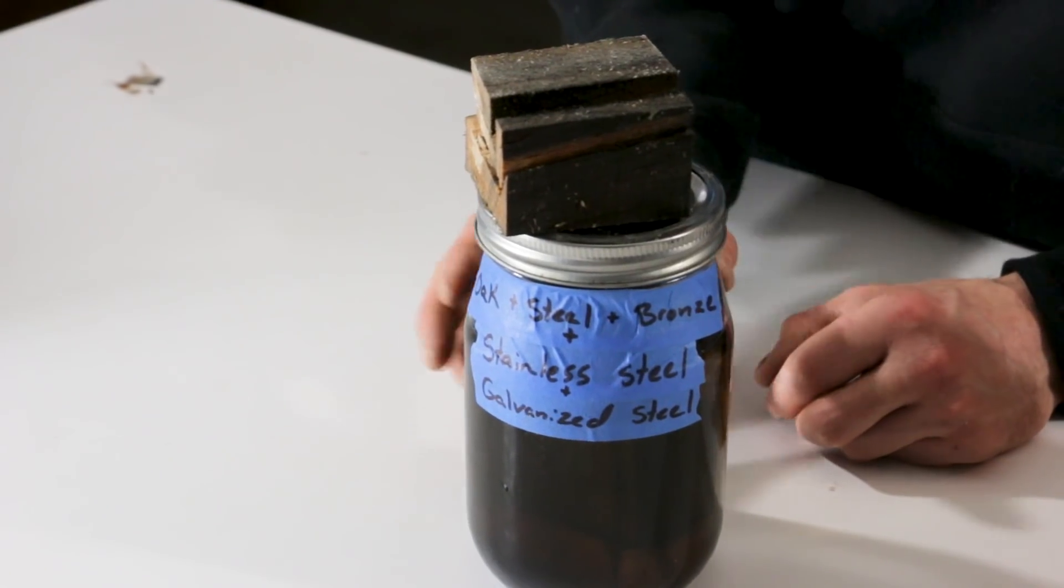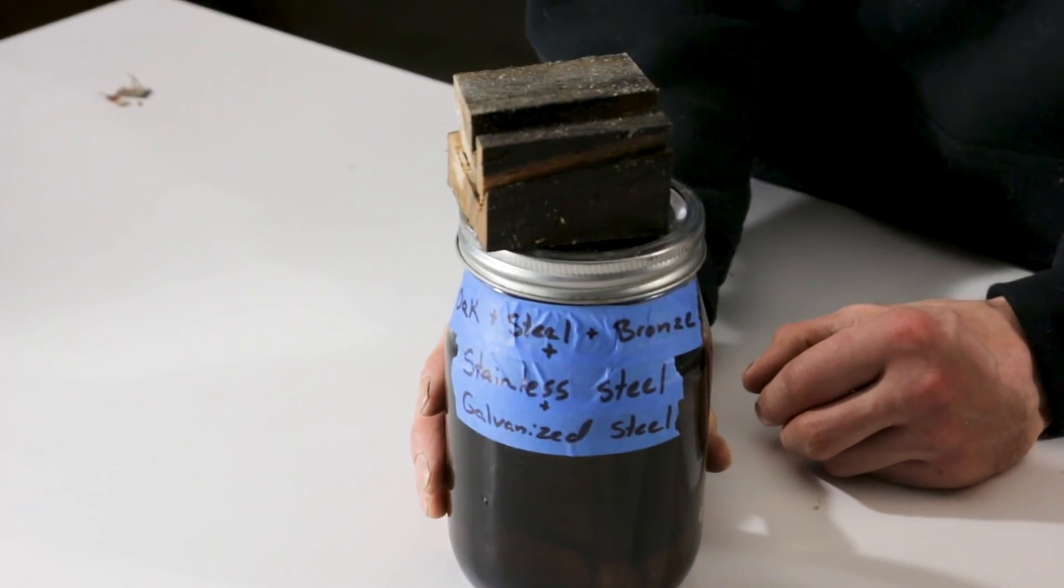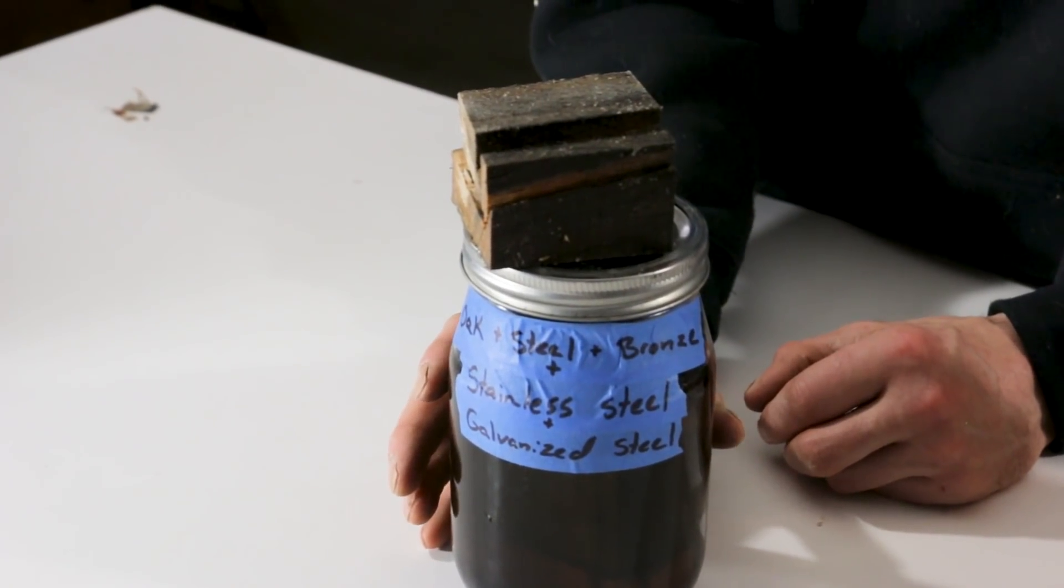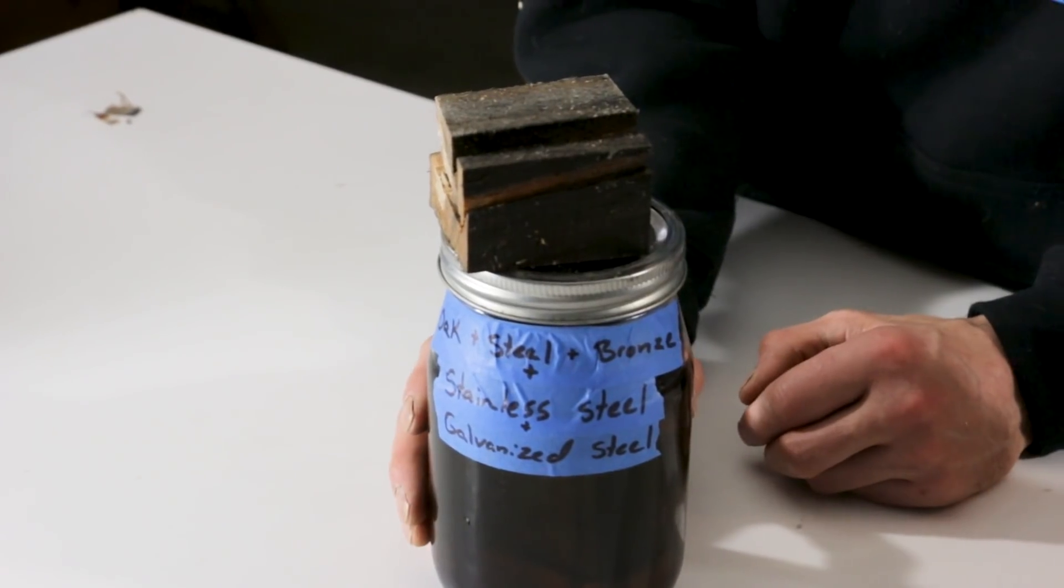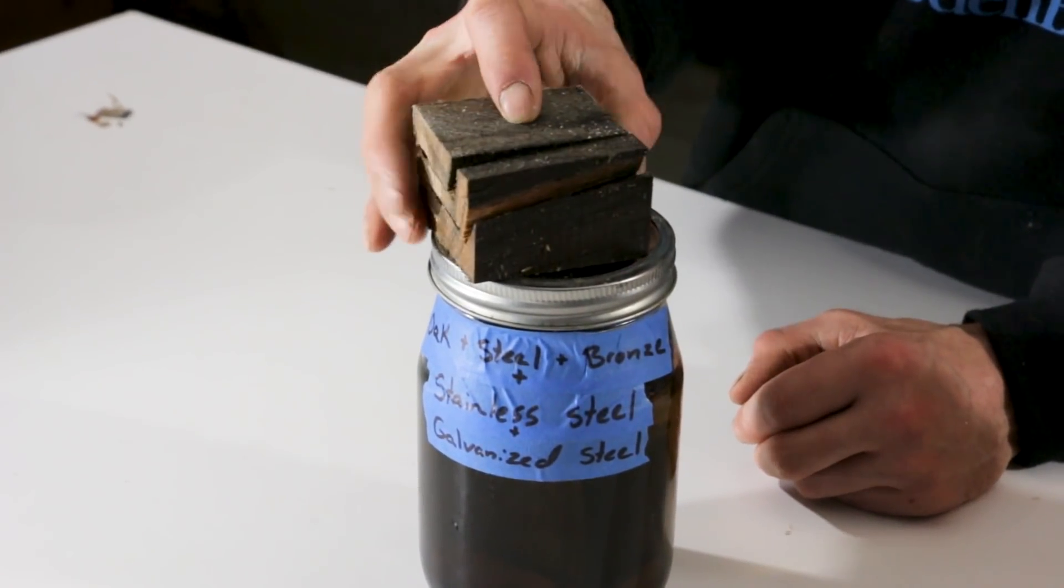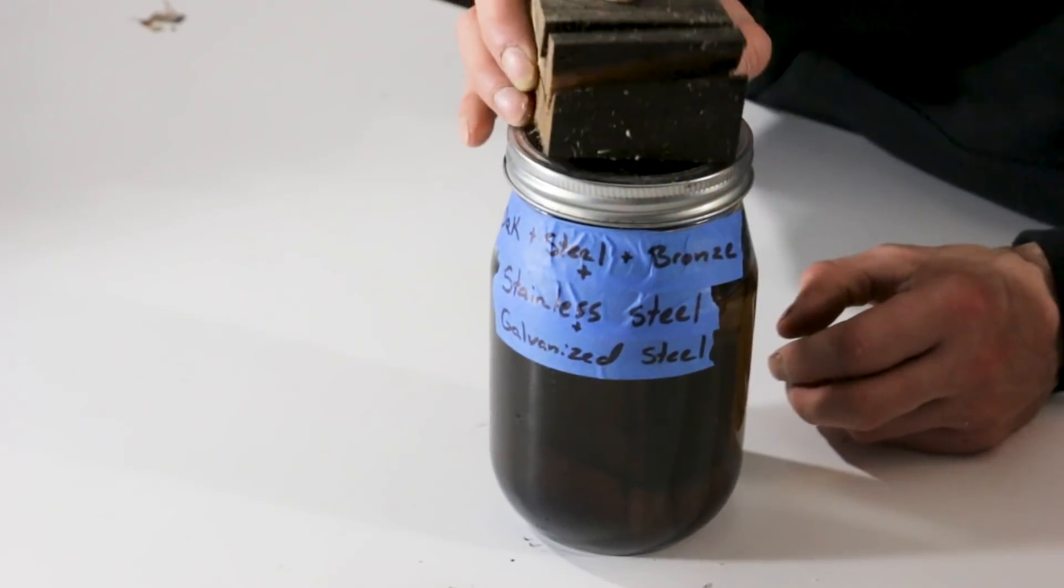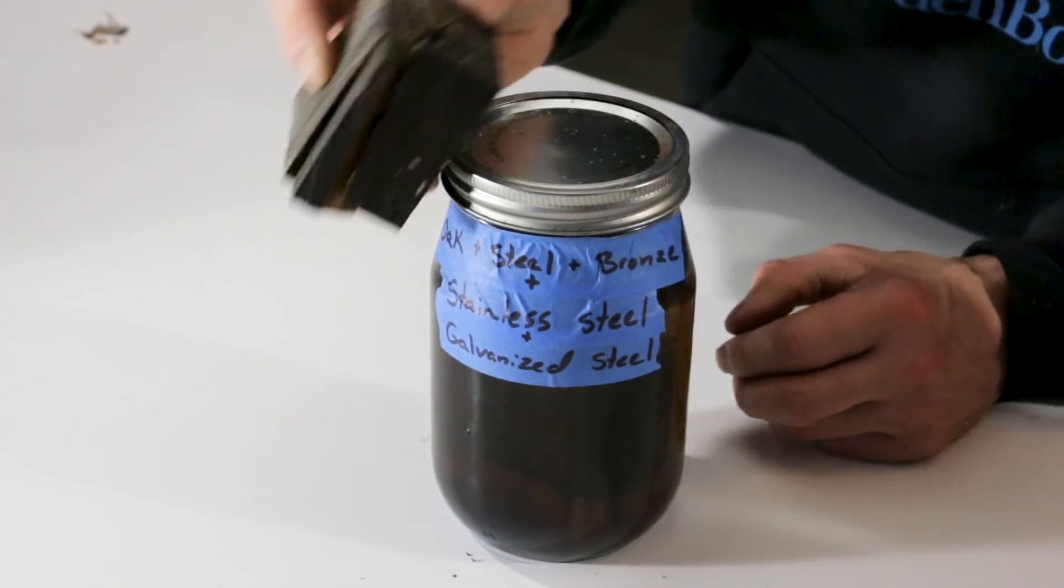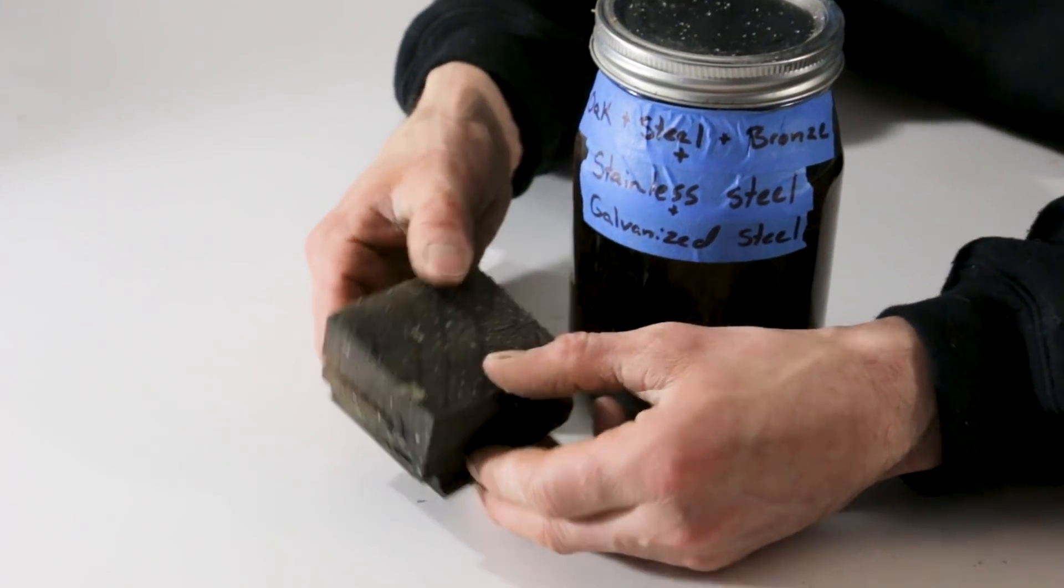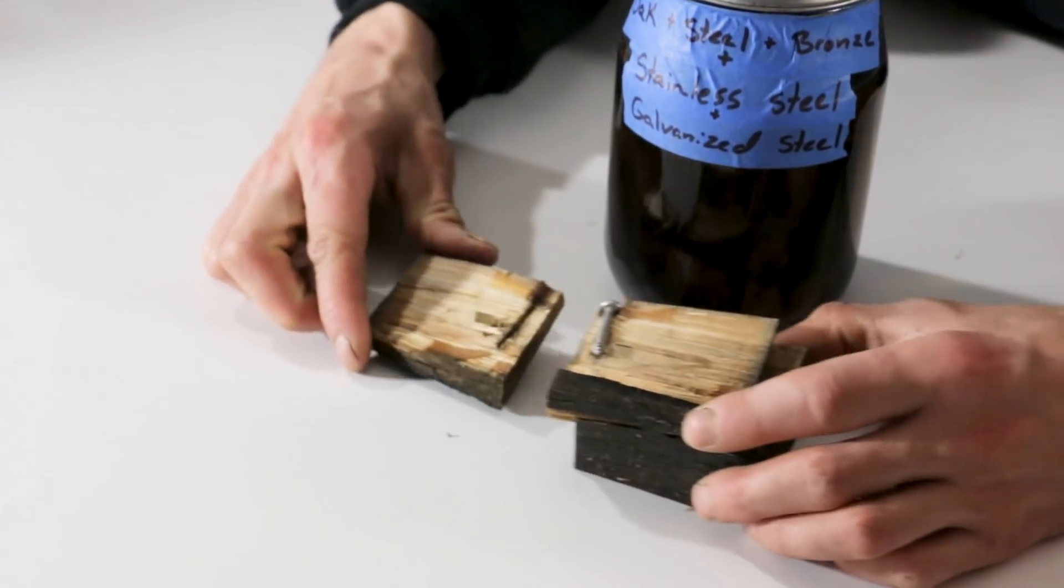All right, so this is our last sample. And on all the previous ones, we were just looking at the interaction of the fastener and the saltwater and the oak, or in the one instance, the pine. And here we're looking at not only those metals interacting with the saltwater and the oak, but those metals interacting with each other. And we can see that the water is really dark and the wood is basically black. Things have not been going on nicely in here.